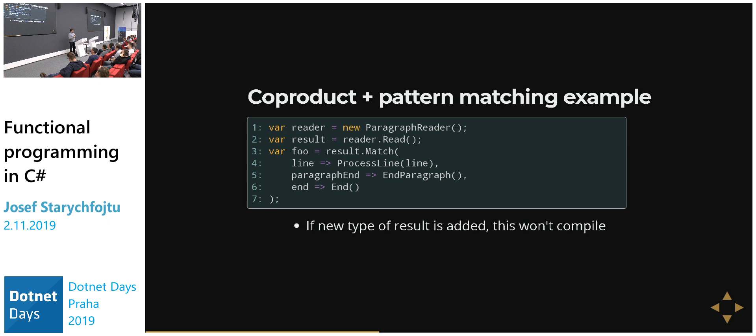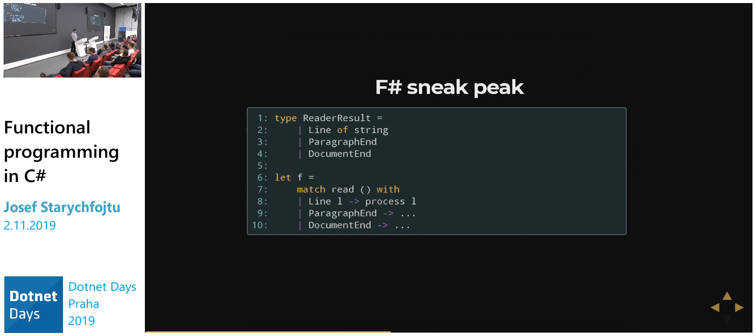As a sneak peek before the F# talk - this is how you write the whole thing in F#. Coproducts are first-class citizens in functional languages, and it's pretty easy to add them. That's why functional programmers like functional languages - these things are built in.